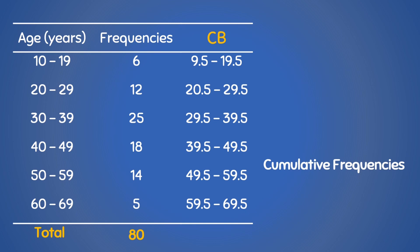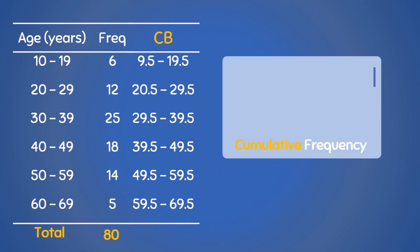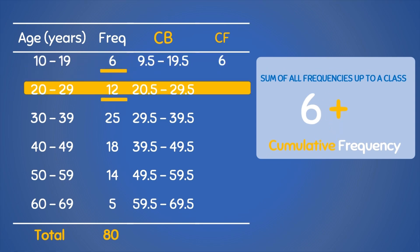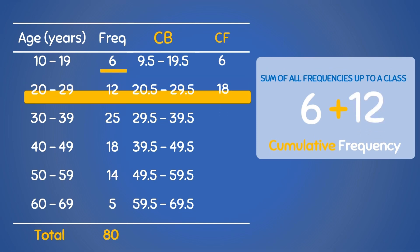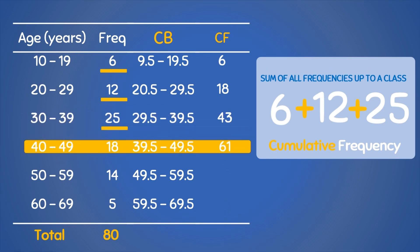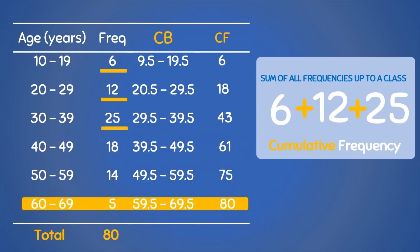Next, we calculate the cumulative frequencies. The cumulative frequency for a particular class is the sum of all the frequencies leading up to that class plus the frequency of that class. For the first class, the cumulative frequency is 6. For the second class, it's 6 plus 12, which is 18. For the third class, 6 plus 12 plus 25 gives us 43. Continuing, we get 61, then 75, and lastly 80. As a check, the cumulative frequency of the last class should equal the total frequency.